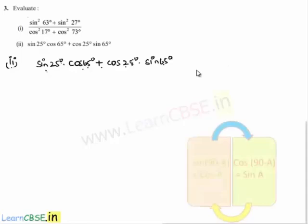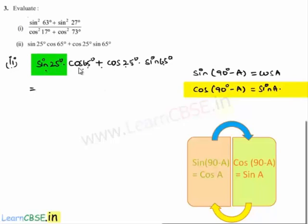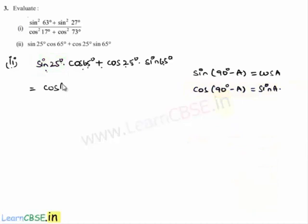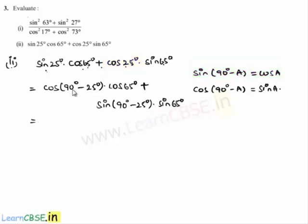Using sin(90° - a) = cos a and cos(90° - a) = sin a, we express the first term: sin25° = cos(90° - 25°) = cos65°. So the expression becomes cos65°·cos65° + sin65°·sin65°, which equals cos²65° + sin²65°.